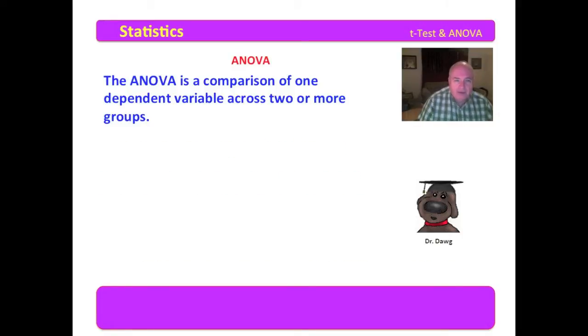The ANOVA is a comparison of one dependent variable across two or more groups. Now, if you do an ANOVA with one variable across two groups, you are, in fact, doing a t-test, which we discussed earlier. But you could do two, three, four, any number of groups in an ANOVA.